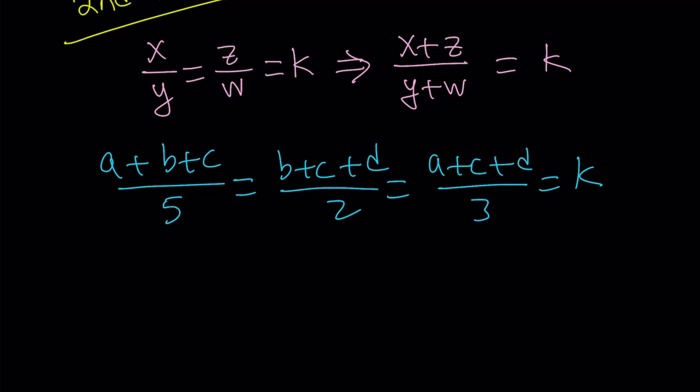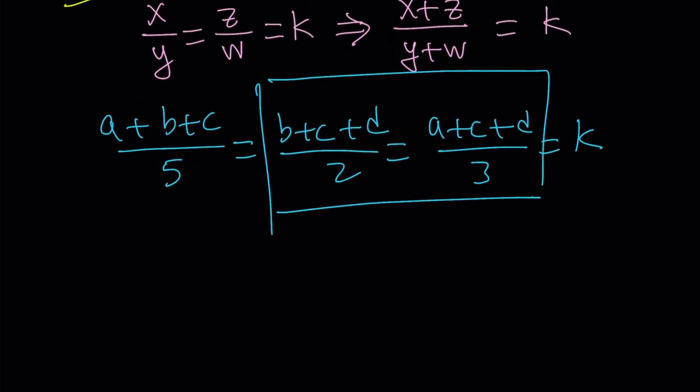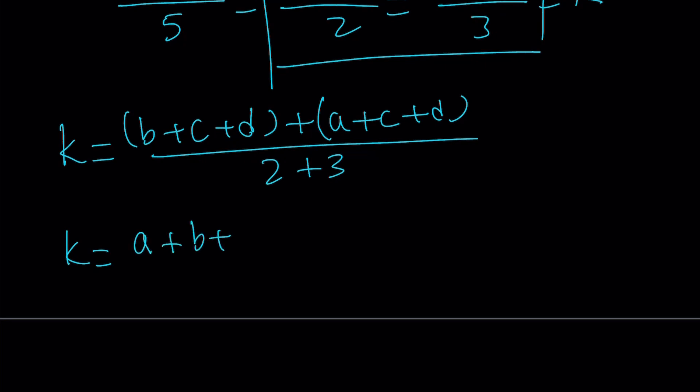From here, I noticed the following. One of the ratios or fractions has a 5 in the denominator. The others have 2 and 3. So that would make sense if I add these two together by using the method componendo dividendo. So k equals b plus c plus d plus a plus c plus d divided by 2 plus 3. That gives us k equals, notice that I get an a, then I get a b, and then I get 2c plus 2d divided by 5.